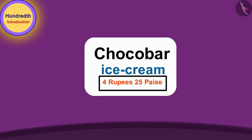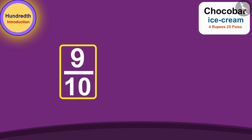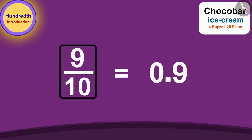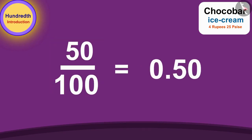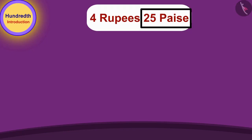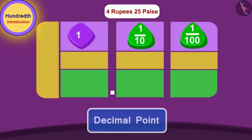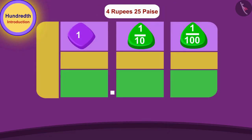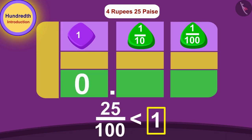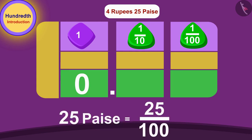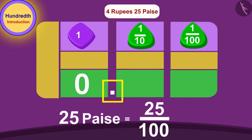Chocobar ice cream costs Rs. 4.25. Just as we write one-tenth of any number using a decimal point, in the same way we can write one-hundredth of any number using a decimal point. Here, 25 paise is 25 hundredth parts of a rupee. So we will first draw a decimal point, then write zero before it because 25 hundredths is less than one whole. Since 25 paise is 25 hundredths of a rupee, we will write the number 25 after the decimal point.